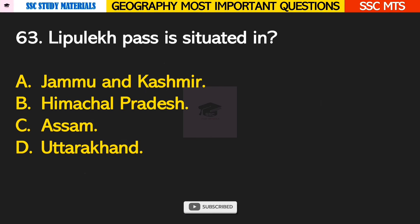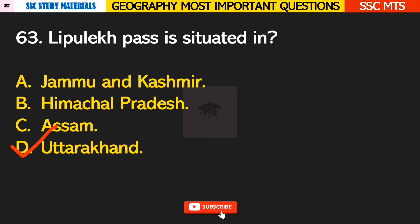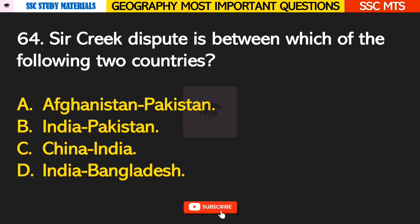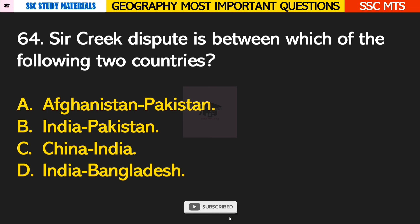Question number 63: Lipulekh Pass is situated in? Answer D — it is situated in Uttarakhand. Question number 64: the Sir Creek dispute is between which two countries? Answer B — it was between India and Pakistan.